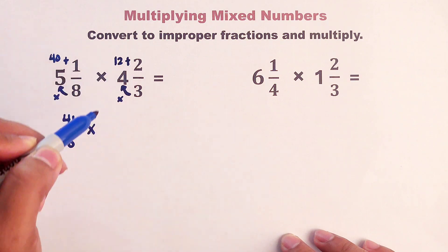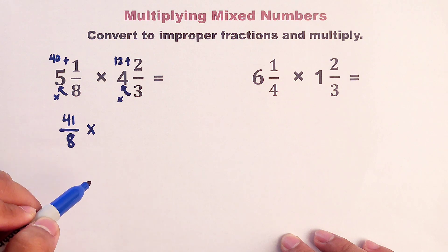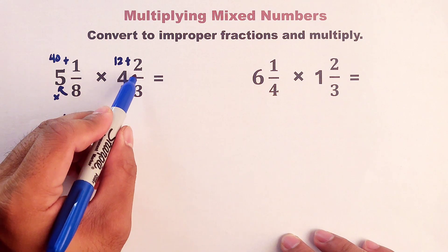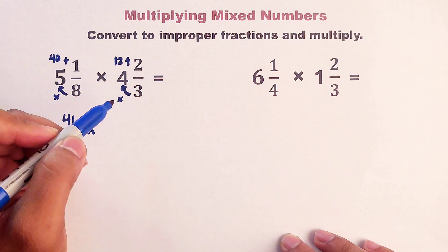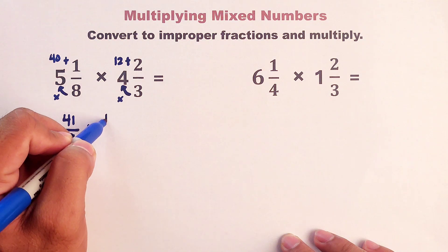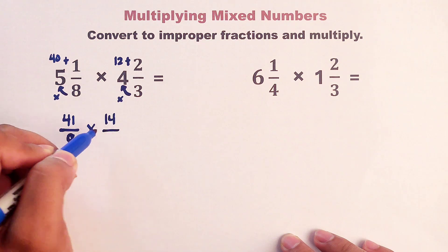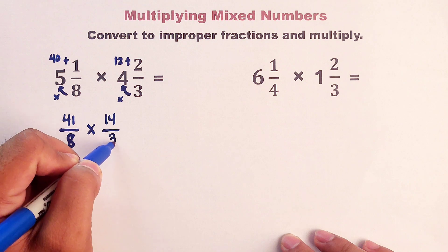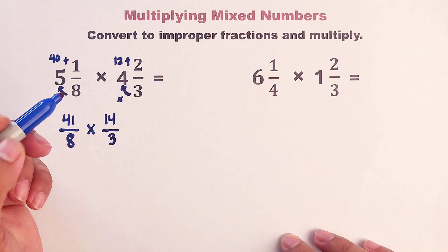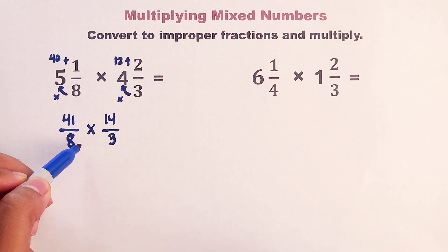Then add the numerator. We have 12 plus 2. That will be equal to 14 over 3. And now, as you can see, we have these numbers to be multiplied.